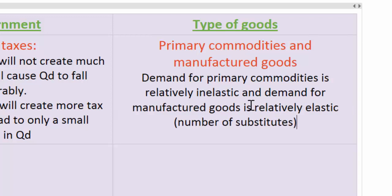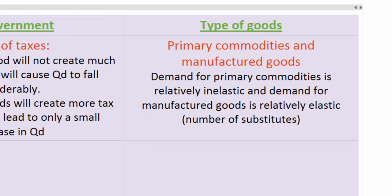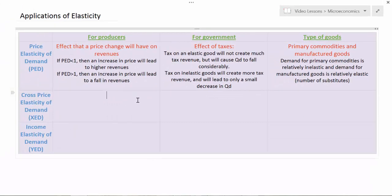For example, there's no substitute for oil. However, the things that oil and other primary commodities are used to manufacture can have several different substitutes. Therefore, demand for manufactured goods tends to be more elastic due to the greater number of substitutes, compared to the demand for the primary commodities that are used to produce them.